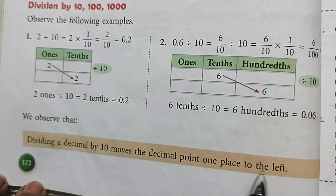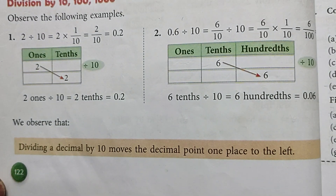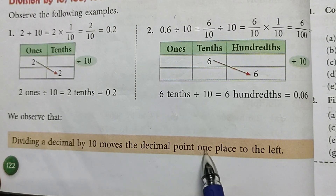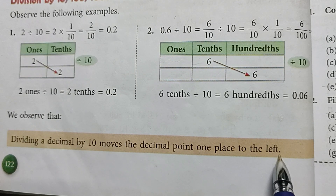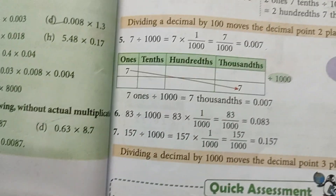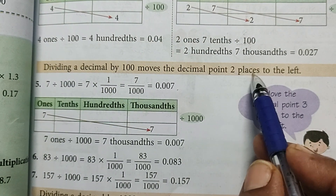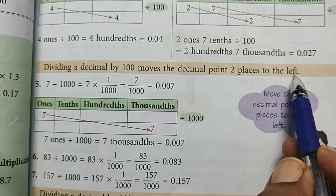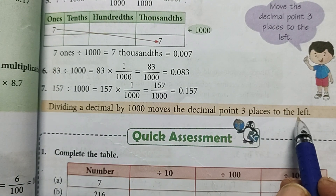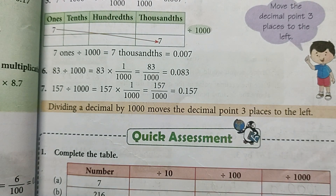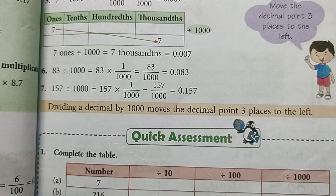Just the opposite happens in division. Dividing a decimal by ten moves the decimal point one place to the left. Agar aap ten se kisi bhi decimal number ko divide karenge to decimal point one place left mein shift ho jayega. Hundred se divide karne par two places to the left, aur thousand se divide karne par woh three places left mein move karega.